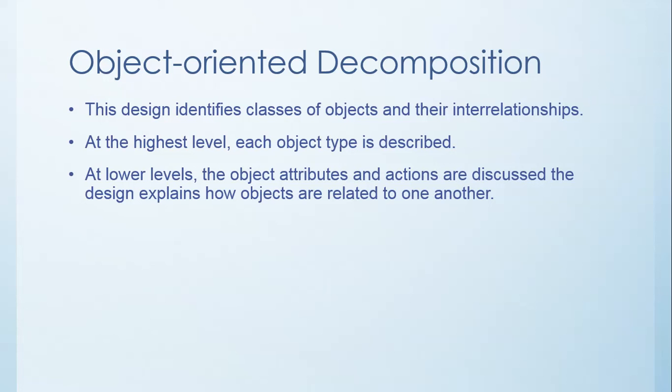The last of the five main ways that you can decompose a system is object-oriented decomposition. This design identifies the classes of objects and their relationships. At the highest level each object type is described, and then at lower levels the object attributes and actions are discussed. The design explains how the objects are related to one another and how they interact.